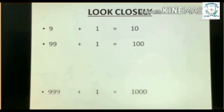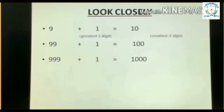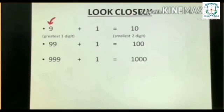Look closely: 9 plus 1 equals 10. 9 is the greatest one-digit number and 10 is the smallest two-digit number. 99 plus 1 equals 100, where greatest two-digit number is 99 and the smallest three-digit number is 100.